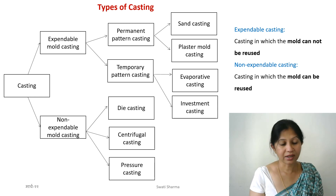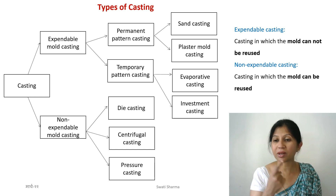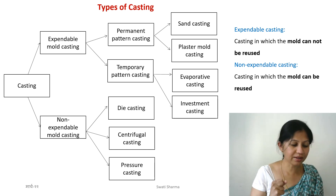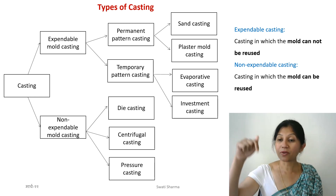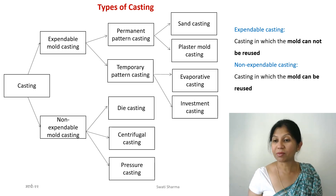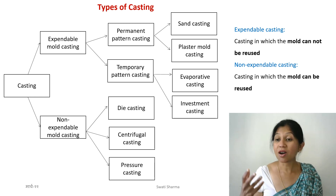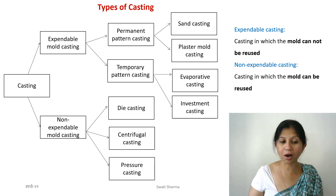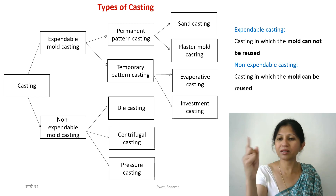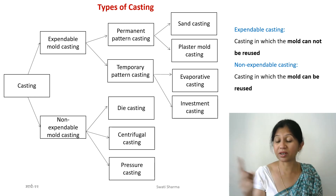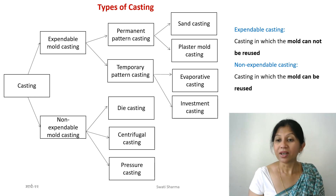Centrifugal casting, as the name suggests, involves centrifugal force — something is rotating. Your entire part mold is rotating when you fill the metal into it. This makes it easy to produce hollow shapes, because you don't need an additional insert; the metal only goes to the sides due to the rotation.